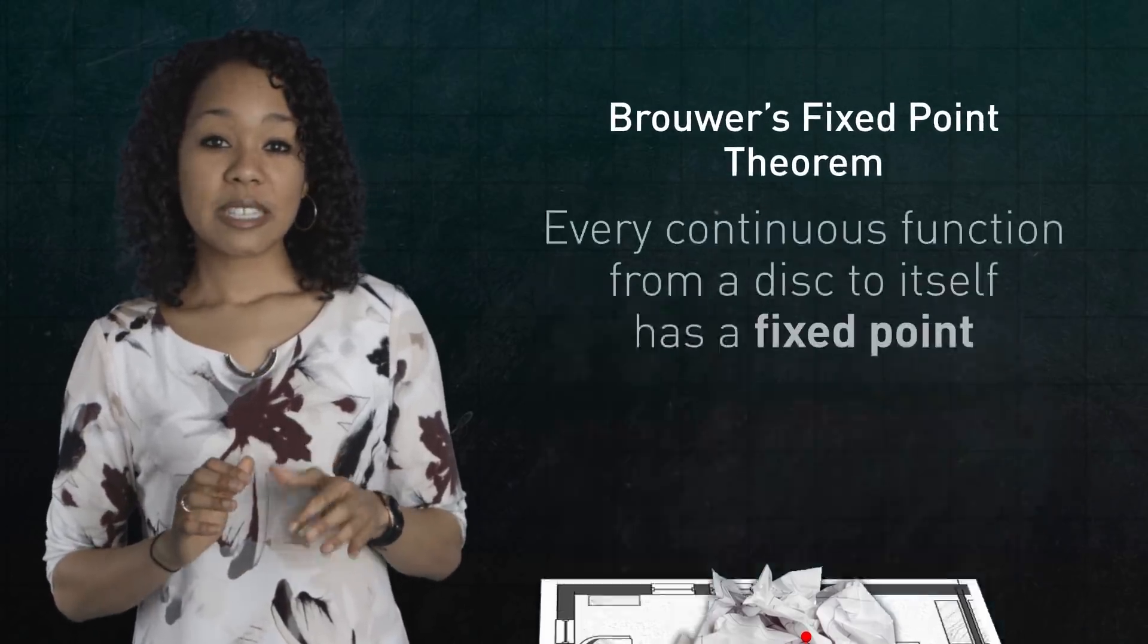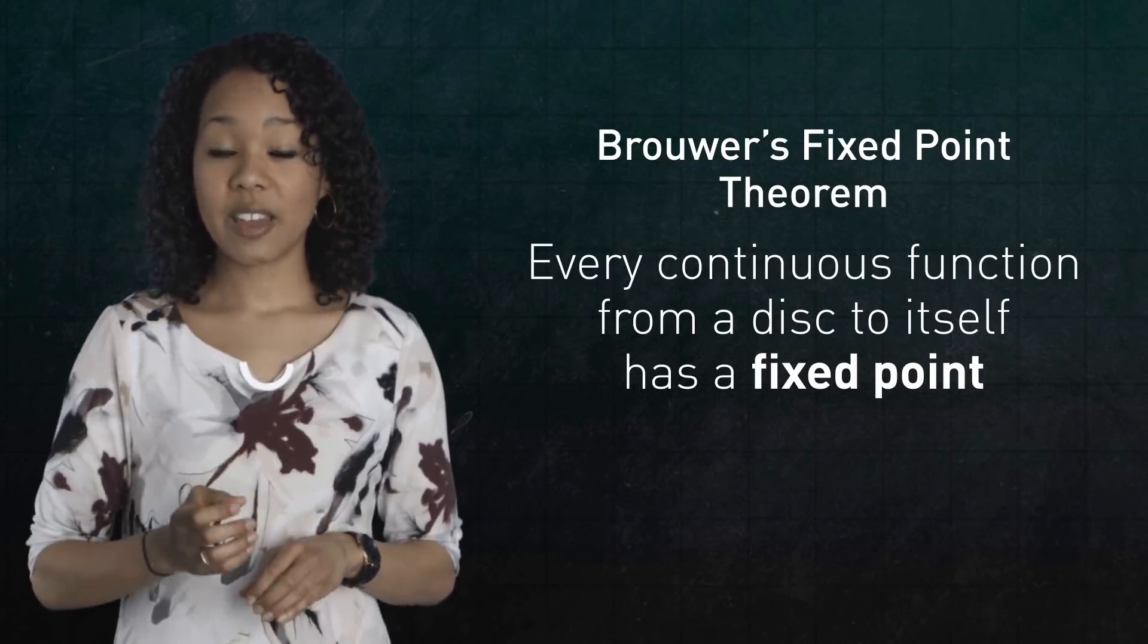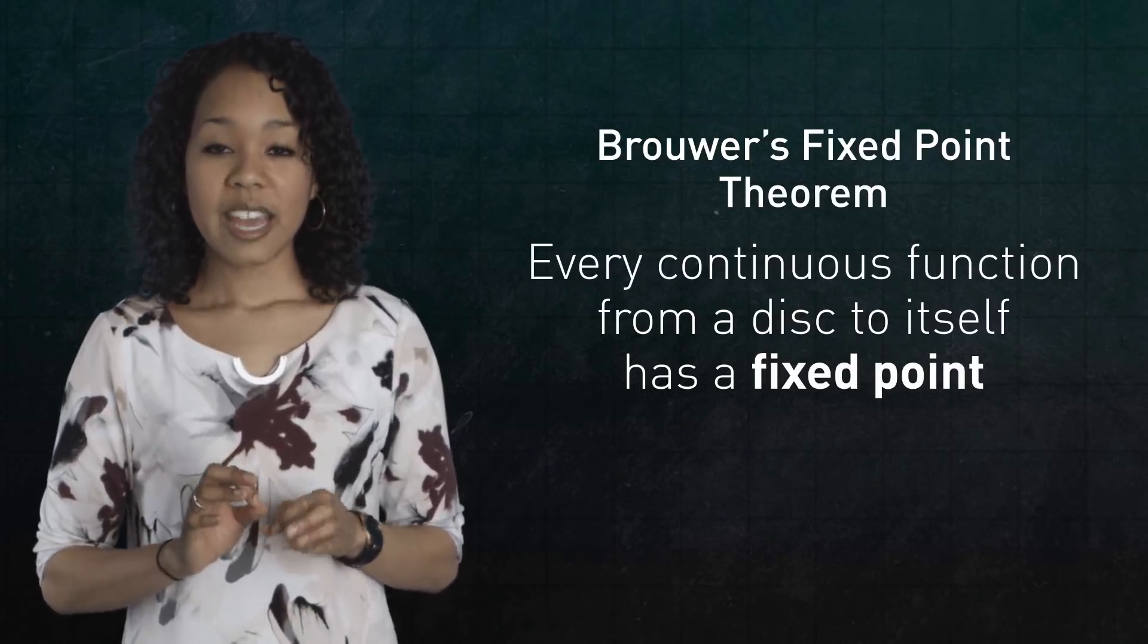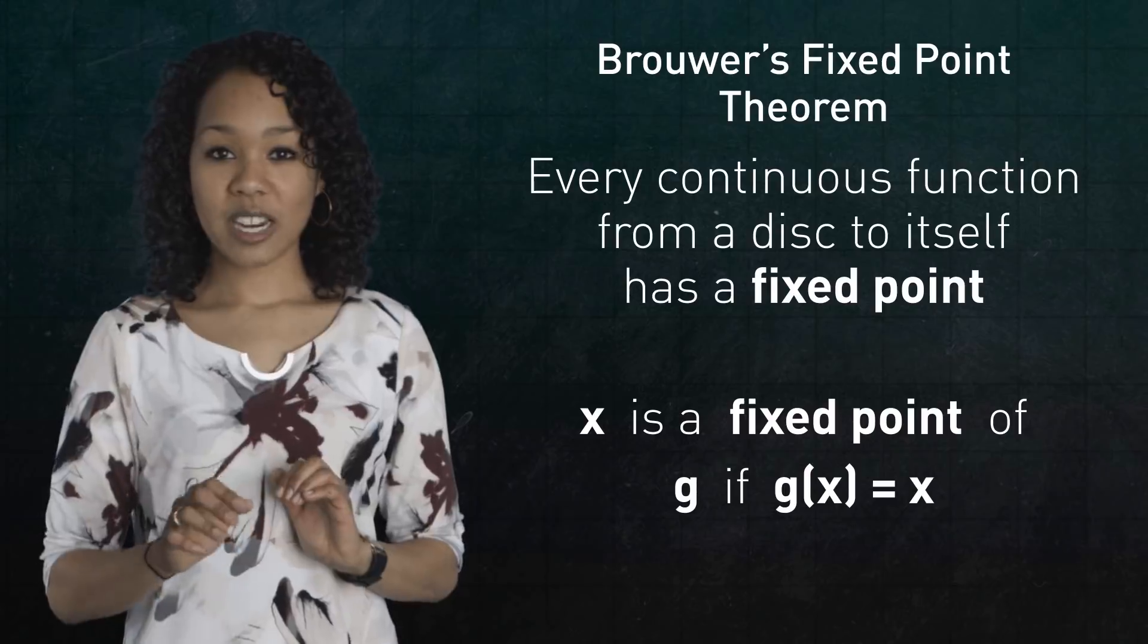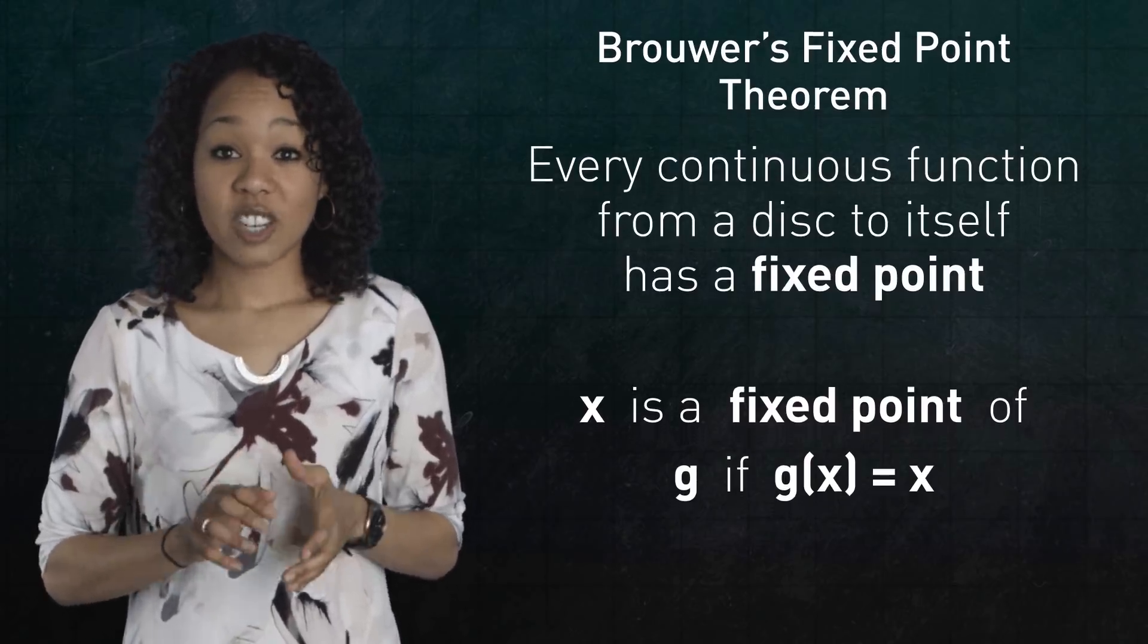More formally, the theorem says that every continuous function from a disk to itself has a fixed point. A point x is called a fixed point of a function g if g assigns x to itself, if g(x) = x.